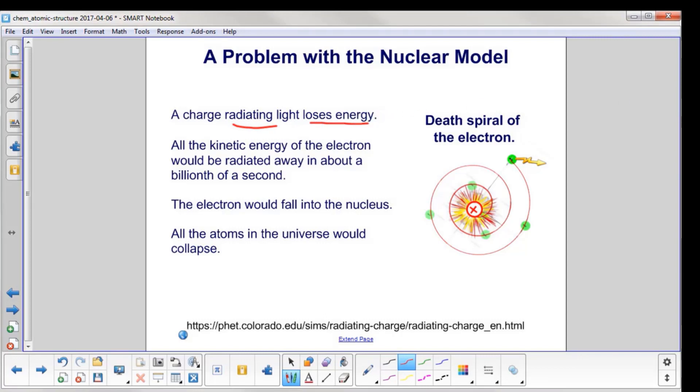All of the kinetic energy of the electron from its motion would be radiated away in about a billionth of a second. The electron would then fall into the nucleus. All the atoms in the universe would collapse. So it's a rather dramatic name here, the death spiral of the electron.